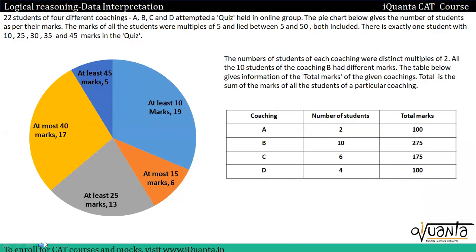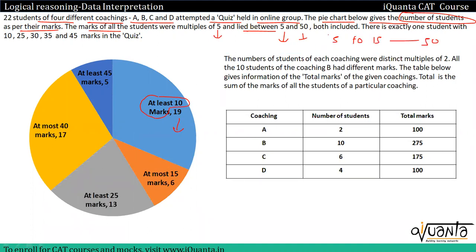Hi everyone. In this video we will understand how we can solve this type of set. We are given that 22 students of four different coachings A, B, C, and D attempted a quiz held in an online group. The pie chart gives the number of students as per their marks. The marks of all students were multiples of five and lay between five to fifty — ten, fifteen, and so on till fifty. Exactly one student each scored ten, twenty-five, thirty, thirty-five, and forty-five marks in the quiz. The number of students of each coaching were distinct multiples of two, and all ten students of the coaching had different marks.